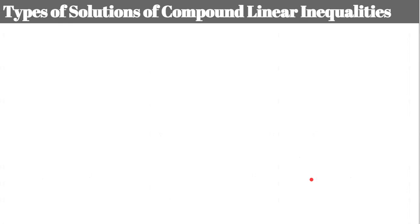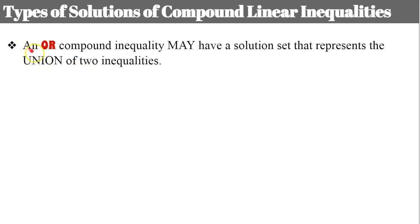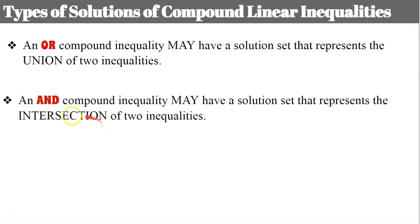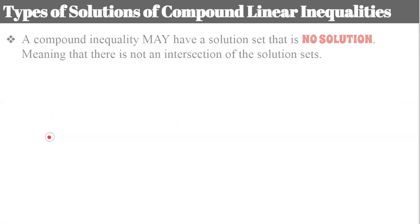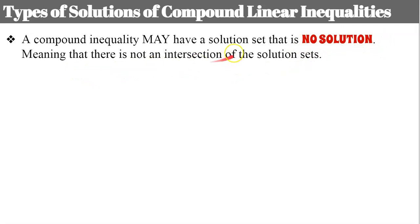When you solve compound linear inequalities, an OR may have a solution set that represents the union of two inequalities. Prior to watching this video you're accustomed to either a union or an intersection. With an AND compound inequality you may have a solution set that represents the intersection. There are special situations where these do not happen — one option is that a compound inequality may have a solution set that is no solution, meaning there is no intersection of the solution sets.